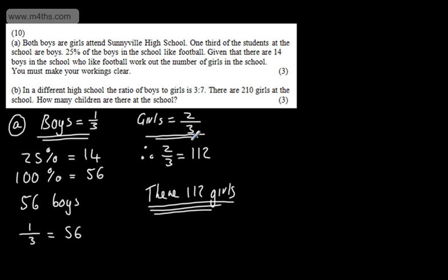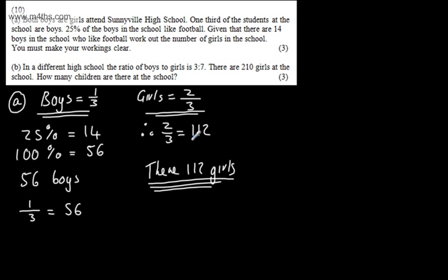In part B, for three marks, it says, in a different school, the ratio of boys to girls is three to seven. There are 210 girls at the school. How many children are there at the school?